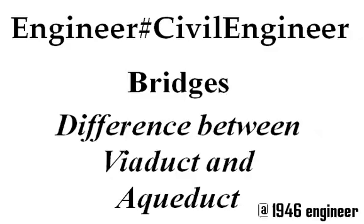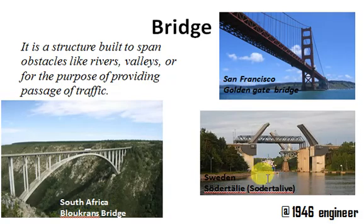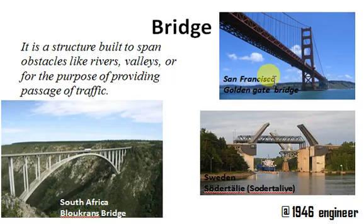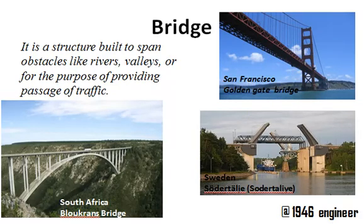First of all, let us recall the definition of a bridge. A bridge is a structure built to span obstacles like rivers, valleys, or for the purpose of providing passage of traffic. It connects two parts on the edge surface, and it is a very important structure in terms of development.